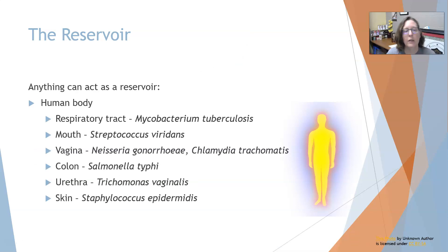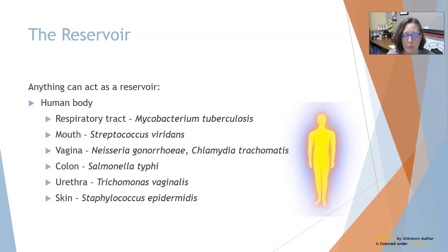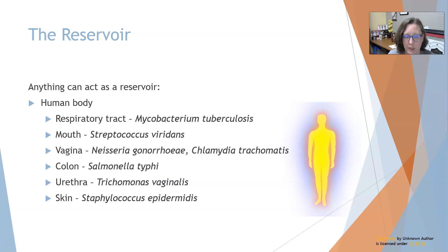Anything can act as a reservoir, including the human body. The respiratory tract can become a reservoir for Mycobacterium tuberculosis in patients who have TB — they're a walking reservoir, and whenever they cough, they send the bacteria out and could cause infection in others. The mouth can contain Streptococcus viridans, especially if a person doesn't have good oral hygiene. The vagina could harbor Neisseria gonorrhoeae or Chlamydia trachomatis.